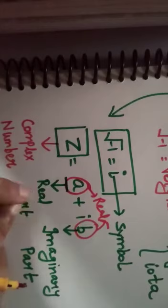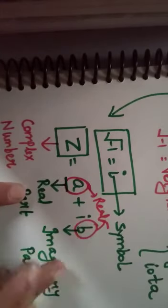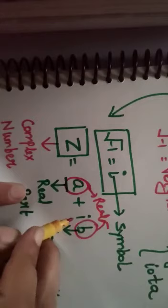But yeh real part hai kyonki i present nahi. B imaginary part hai kyonki ismein i present hai.